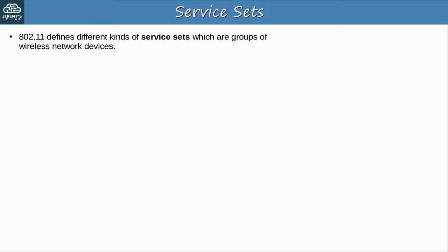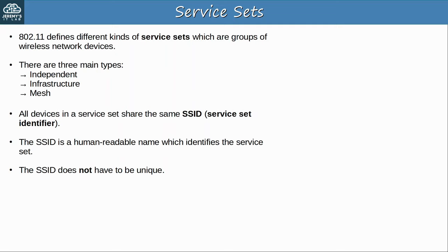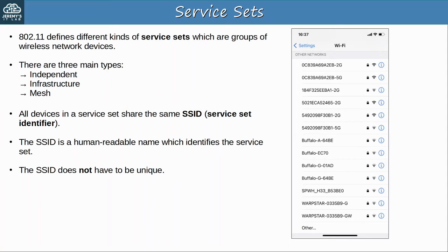Now let's look at another important part of 802.11: service sets. 802.11 defines different kinds of service sets, which are groups of wireless network devices. There are three main types: independent service sets, infrastructure service sets, and mesh service sets. All devices in a service set share the same SSID, service set ID. The SSID is a human-readable name which identifies the service set. It does not have to be unique, although it's best to configure unique SSIDs, since that's what you'll be looking at when you select which network to connect to.